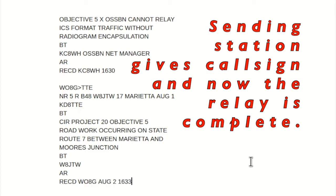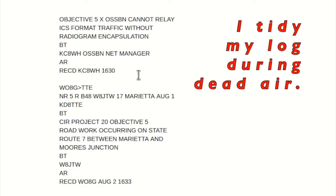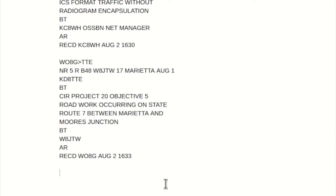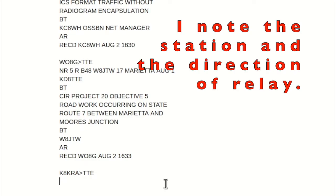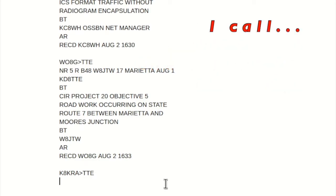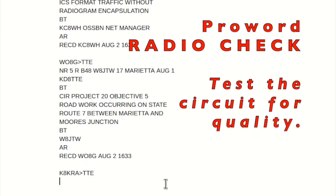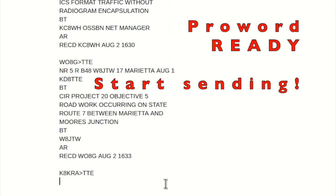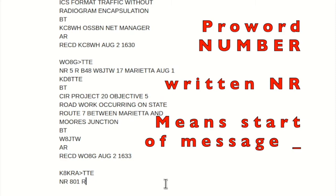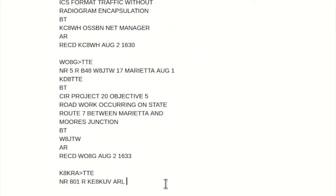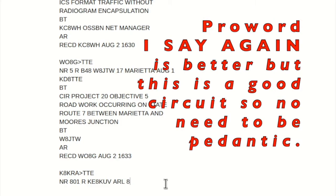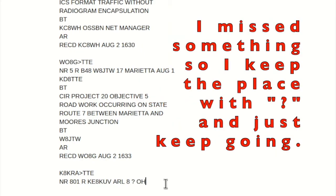Whiskey 8 T-T-E, please call 2-8-K-R-A. Here's one for you. Thank you. Kilo 8 Kilo Romeo Alpha, this is Kilo Delta 8 Tango Tango Echo, radio check, over. Kilo Delta 8 Tango Tango Echo, K-A-K-R-A, I'll copy. You are good, readable, I'm ready. Please copy. Number 8-0-1, Martin, Kilo Echo 8 Kilo Uniform Victor. ARL 8 — correction, that's ARL 8. Cincinnati, Ohio. August, figure 2, KD-8 T-T-E. Break.